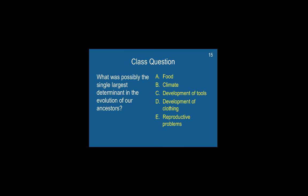Here's a class question: What was possibly the single largest determinant in the evolution of our ancestors? A. Food, B. Climate, C. Development of tools, D. Development of clothing, E. Reproductive problems. Please take a moment to answer.